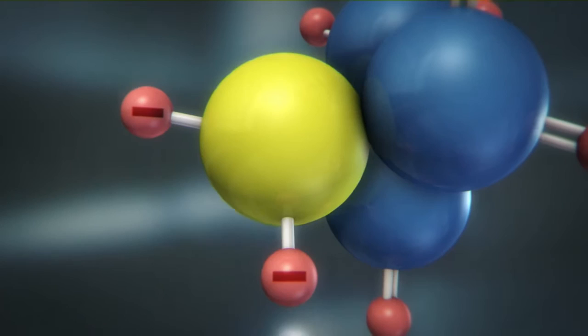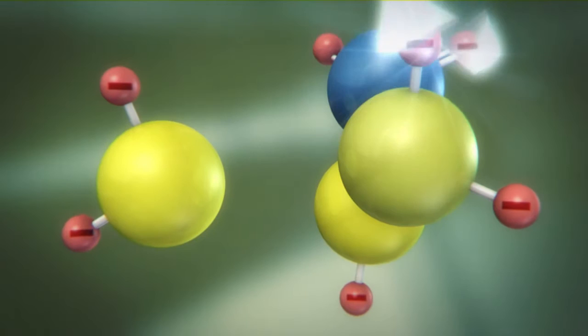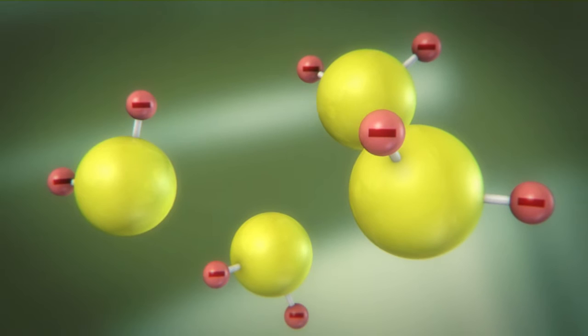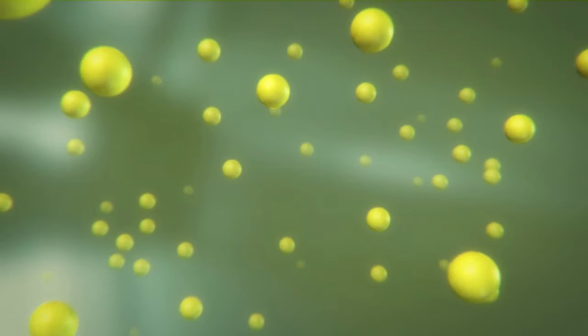In this reduction process, the strong reducing agent sodium hydrosulphite causes the indigo to take up negative charges. The molecules repel each other, making the indigo soluble in water. In this process, indigo loses its blue color. It turns yellow.